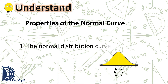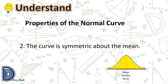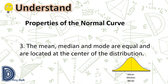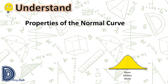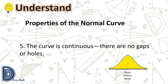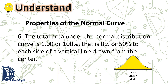Properties of the normal curve: number one, the normal distribution curve is bell-shaped. The curve is symmetric about the mean. The mean, median, and mode are equal and are located at the center of the distribution. The normal distribution curve is unimodal, which means it has only one mode. The curve is continuous — there are no gaps or holes. The total area under the normal distribution curve is 1 or 100%, that is 0.5 or 50% to each side of a vertical line drawn from the center.